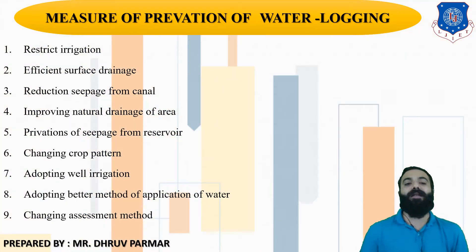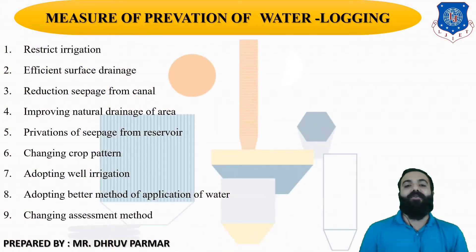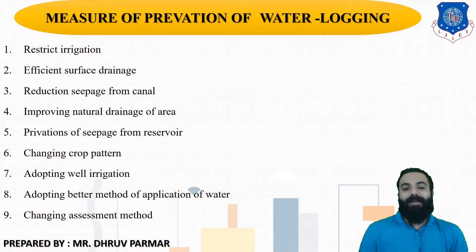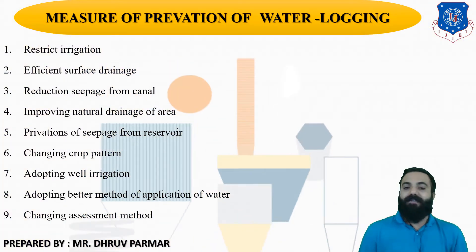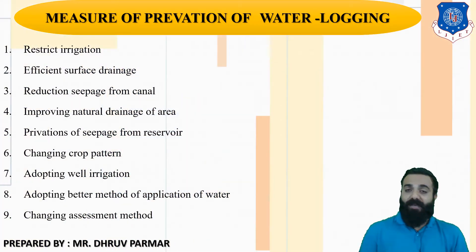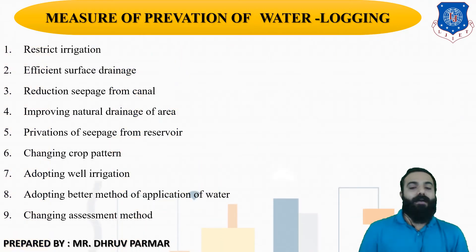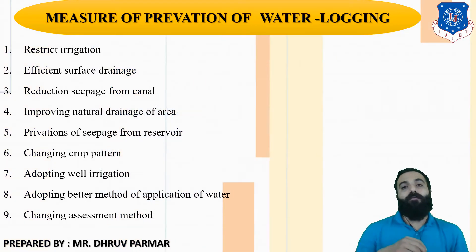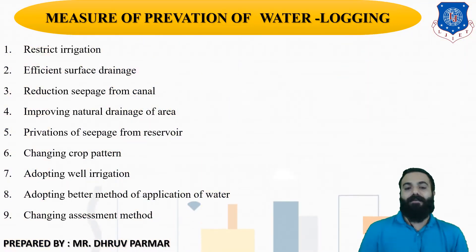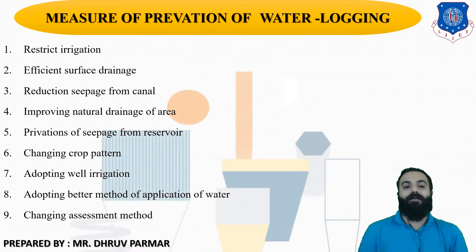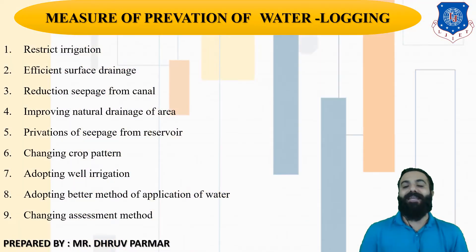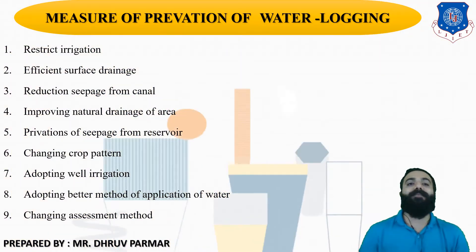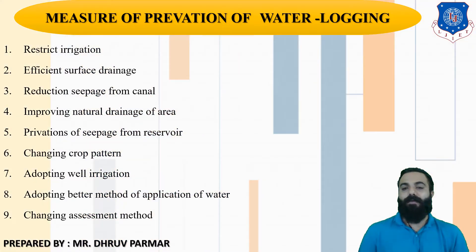The ninth prevention measure is changing the assessment method. There are types such as volumetric, area basis, seasonal basis, and betterment levy. The volumetric method is used to assess irrigation water. In total, there are nine measures for prevention of waterlogging.